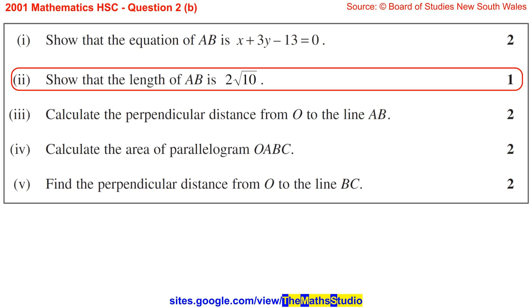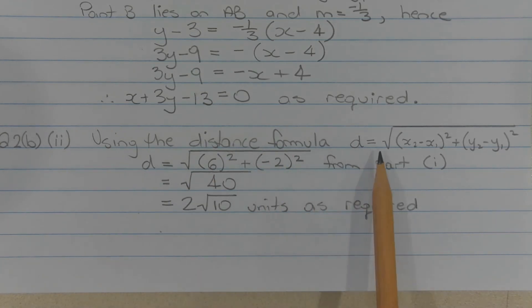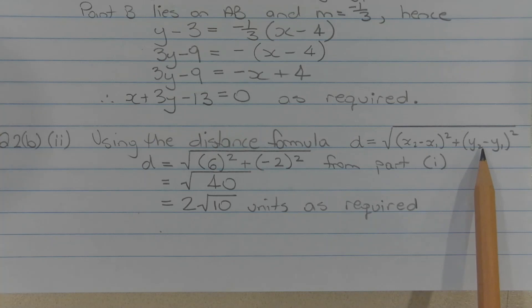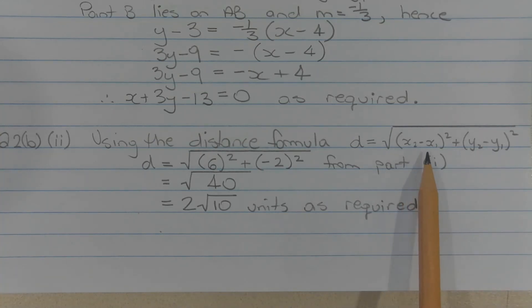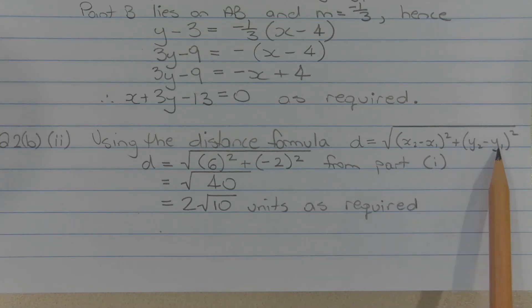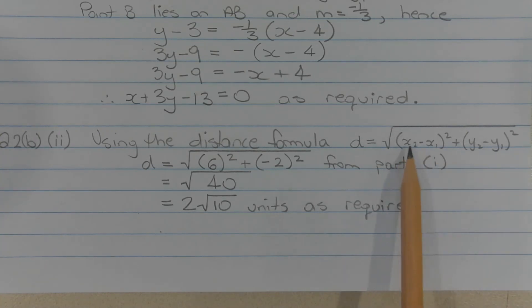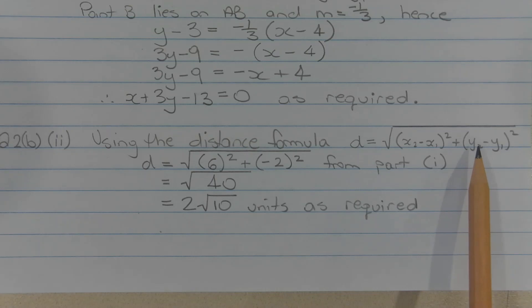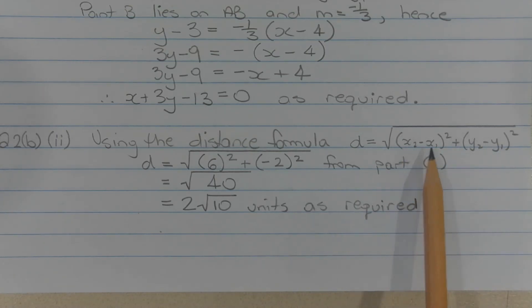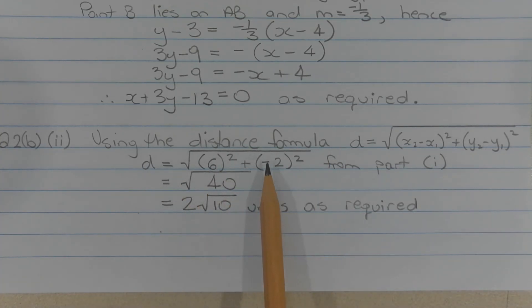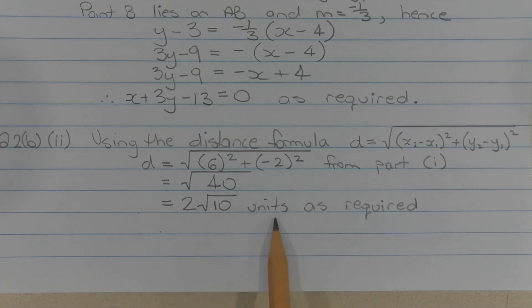Part 2: Show that the length of AB is 2 times the square root of 10. Using the distance formula, d equals the square root of (x2 minus x1) squared plus (y2 minus y1) squared. The run of interval AB is 6 and the rise is negative 2, so d equals the square root of 6 squared plus (negative 2) squared, which equals the square root of 40, which simplifies to 2 times the square root of 10 units, as required.